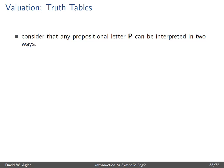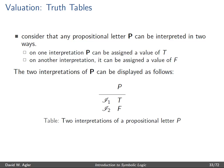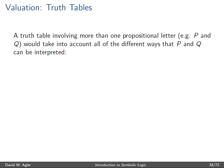Any propositional letter can be interpreted in two ways: P can be assigned a value of true on one interpretation and false on another. We can write P on a line and below it write two separate rows indicating these two interpretations. We can do this for any number of propositional letters, taking into account all the different combinations of truth value assignments.